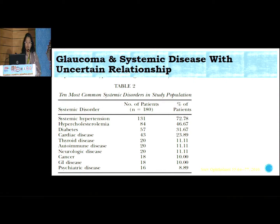There are so many systemic diseases which are associated with glaucoma. A study published in Survey of Ophthalmology showed that systemic hypertension topped the list. Besides this, hypercholesterolemia, diabetes, and cardiac disease can all predispose or be a risk factor for glaucoma.